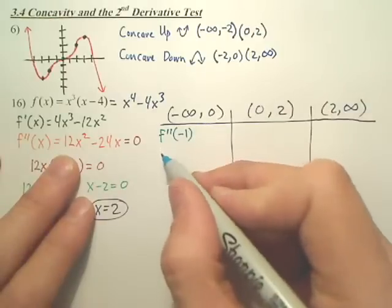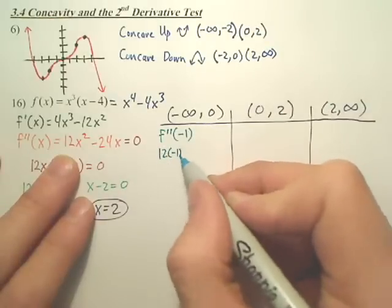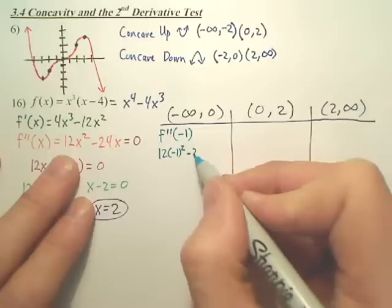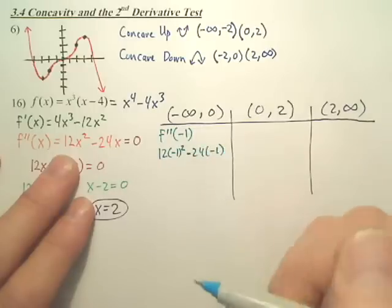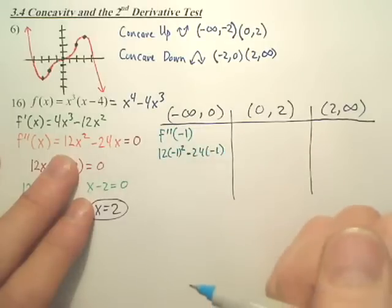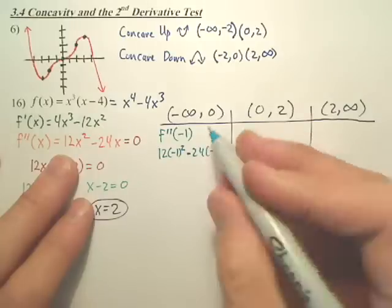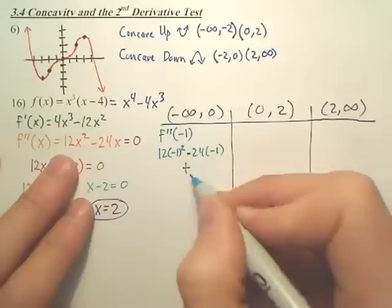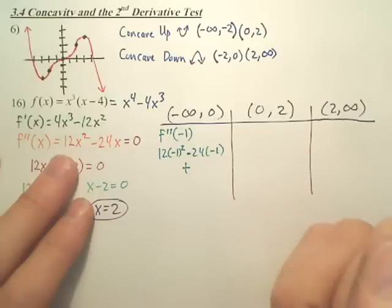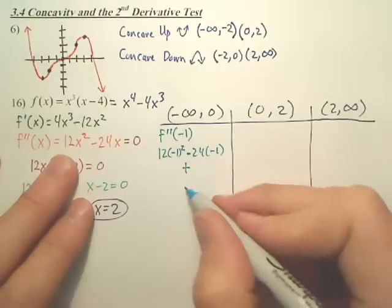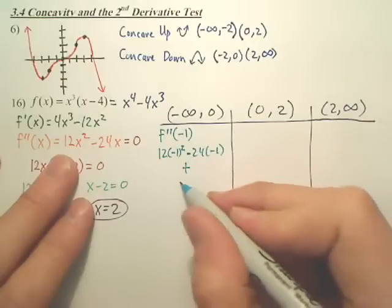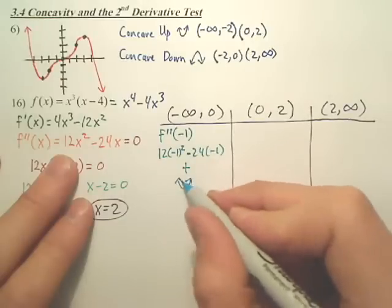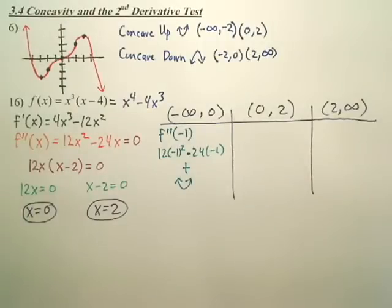What do you get? Well you get 12 times negative 1 squared minus 24 times negative 1. That looks like a positive value. Remember, do you have to even worry about the actual value? No, you don't have to show it. You're just kind of like that's good, positive. What does that mean about the graph? Happy or sad? He's a happy little guy.